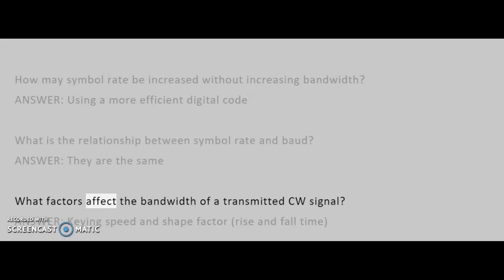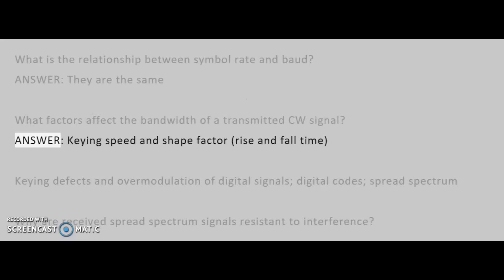What factors affect the bandwidth of a transmitted CW signal? Answer: Keying speed and shape factor, rise and fall time.